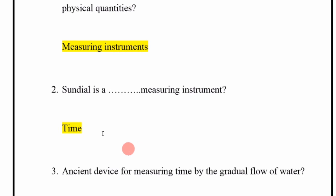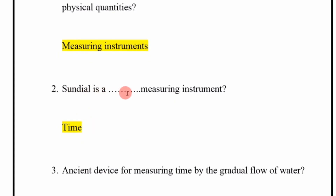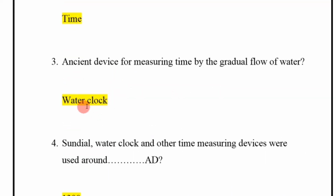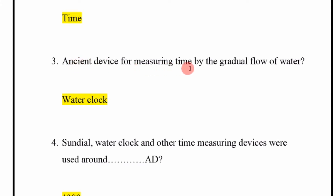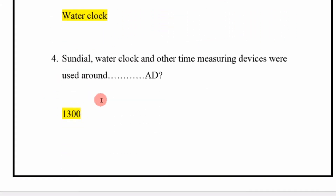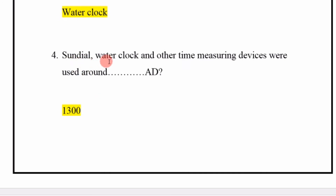A sundial is a time-measuring instrument. An ancient device for measuring time by the gradual flow of water is called a water clock. Sundial, water clock, and other time-measuring devices were used around 1300 AD.